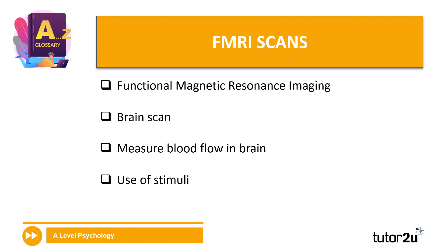fMRI scans, on the other hand — functional magnetic resonance imaging — this is the only type you have to know that is a brain scan involving technology and multiple pieces of equipment. The function of an fMRI scan is that it measures something special about the blood flow in the brain, and again in response to something — a stimuli, it could be an image, a task, anything at all.